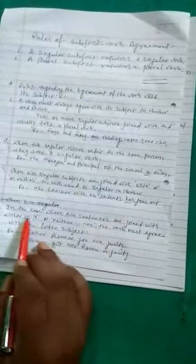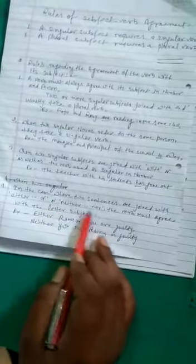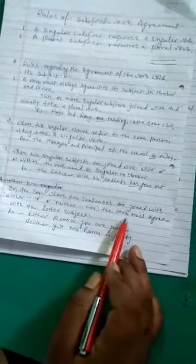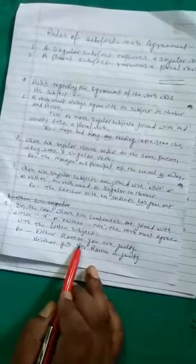Rule fourth. In the case where two sentences are joined with either or or neither nor, the verb must agree with the latter subject. As for example, either Ramu or you are guilty. Another example, neither you nor Ramu is guilty.